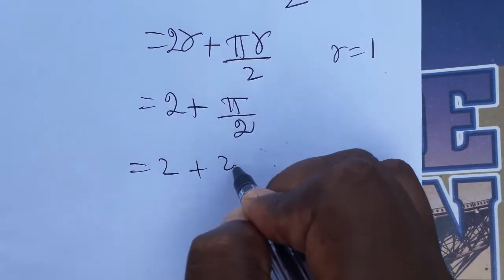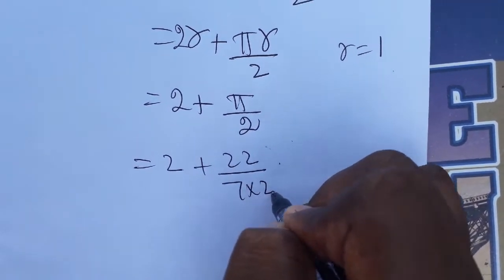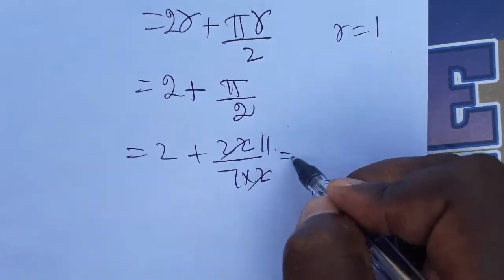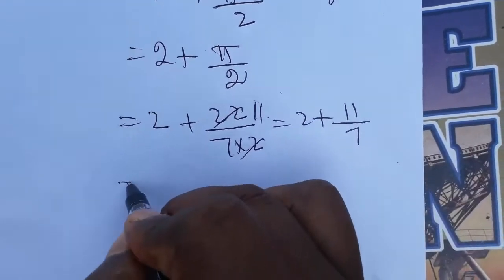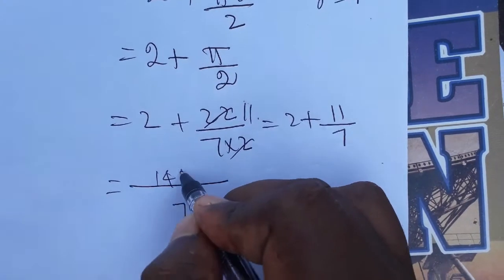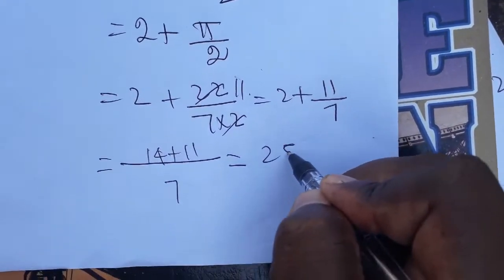So 2 plus π divided by 2. Pi we know is 22 by 7, so 22 by 7 into 2 is 11 by 7. So 2 plus 11 by 7, the final answer is 14 plus 11, which equals 25 by 7.